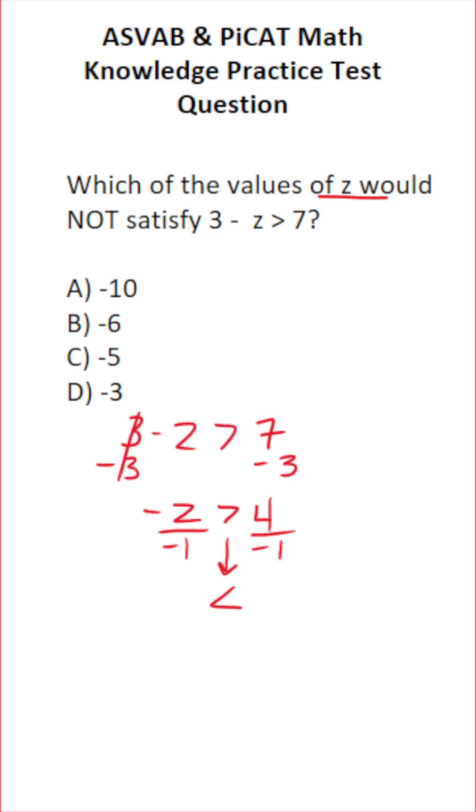A negative divided by a negative is a positive, so this just becomes positive z over here. Four divided by negative one is gonna be negative four. A positive divided by a negative is a negative.